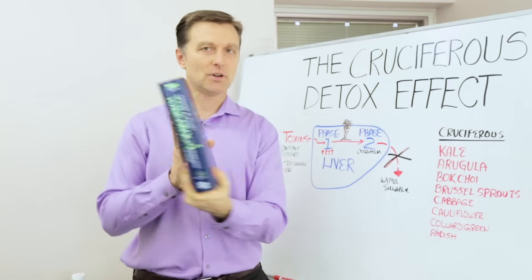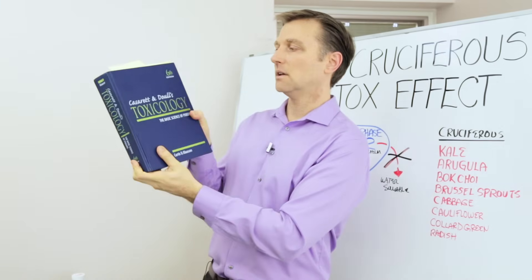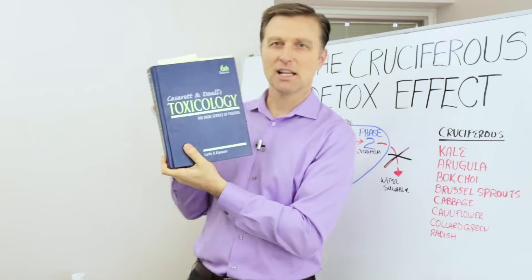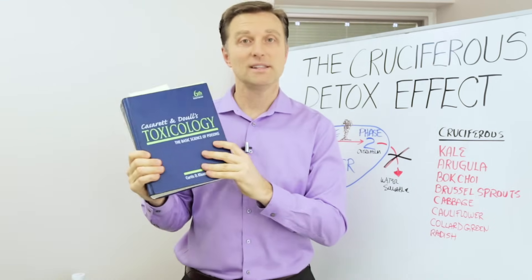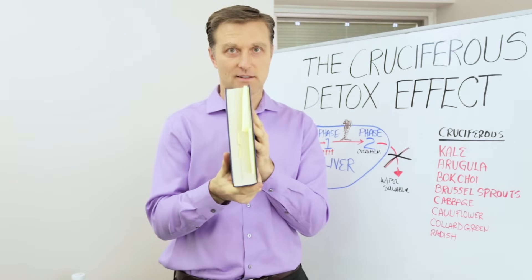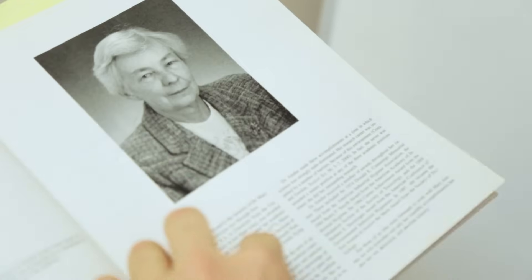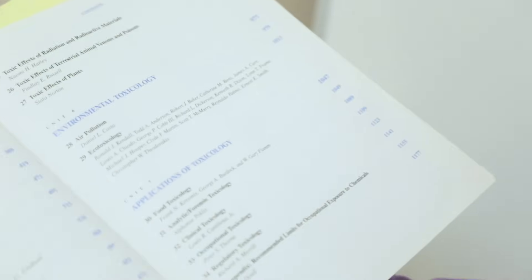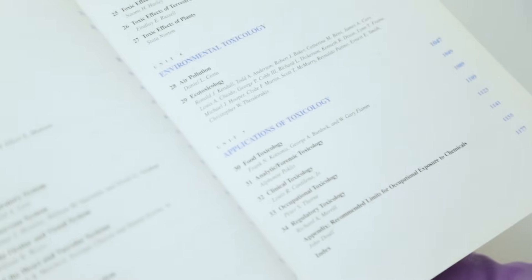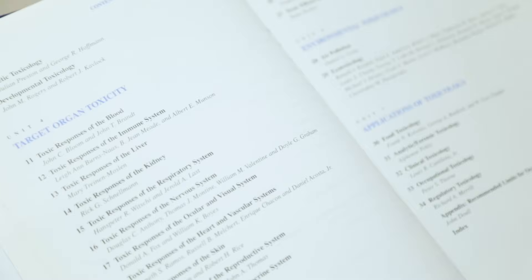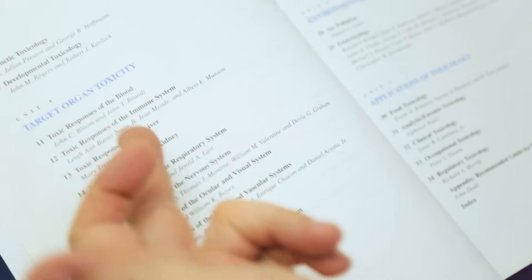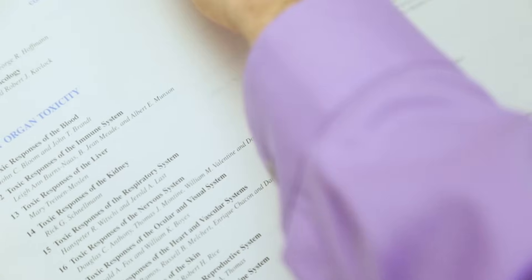So just check this out. See this book right here? This is called toxicology — the study of poisons. Look at how thick this thing is. This is called the basic science of poisons. These are all the different chemicals that a person is exposed to: pesticides, herbicides, and it shows you the effects it has in the body, the diseases it creates, if it's accumulated in the kidney or the liver or the respiratory tract or the skin.